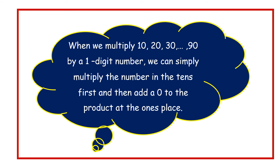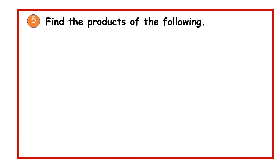From all these examples, we can conclude that when we multiply a number with a 0 — for example 10, 20, 30 up to 90 — by a one-digit number, we can simply multiply the digit in the tens place first, and then add a 0 to the product in the ones place. Let us see this more in the next example.